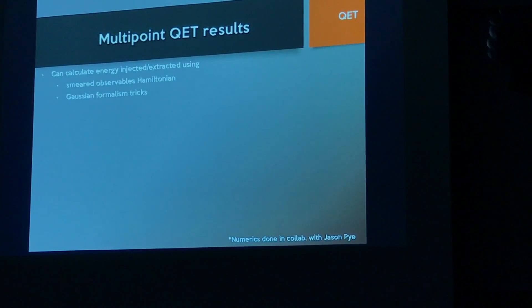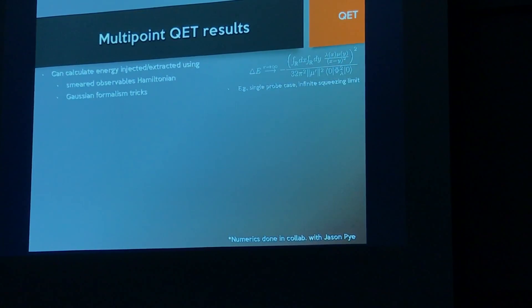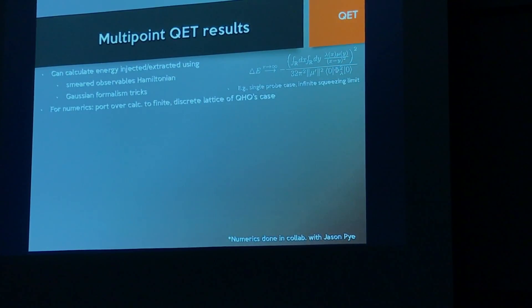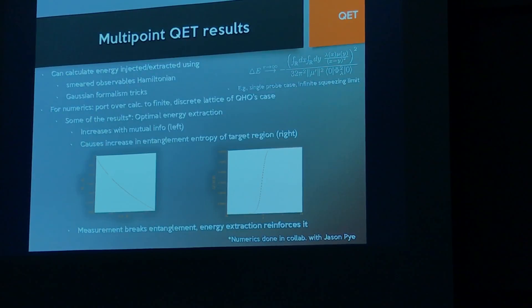We calculate this using our formalism. In the limit of very large squeezing, we get the optimal energy — a negative change in energy equal to a correlator that decays with distance, divided by some variance and norm. The self-variance of Alice is considered as noise — fluctuations not from correlations with Bob. For numerics, we port the formalism to a finite discrete lattice. We can compute entanglement entropies with the power of Gaussian state formalism. The most basic result is that you extract more energy as the amount of information increases.